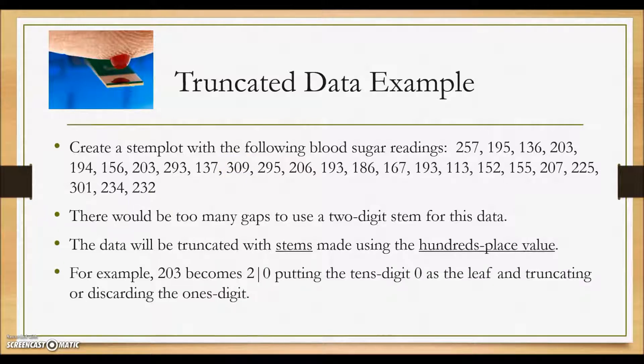And as an example, 203 becomes 2 stem 0, putting the tens digit as the leaf and truncating or discarding the ones digit. So 2 is our stem, 0 is our leaf, the ones digit place is being omitted.